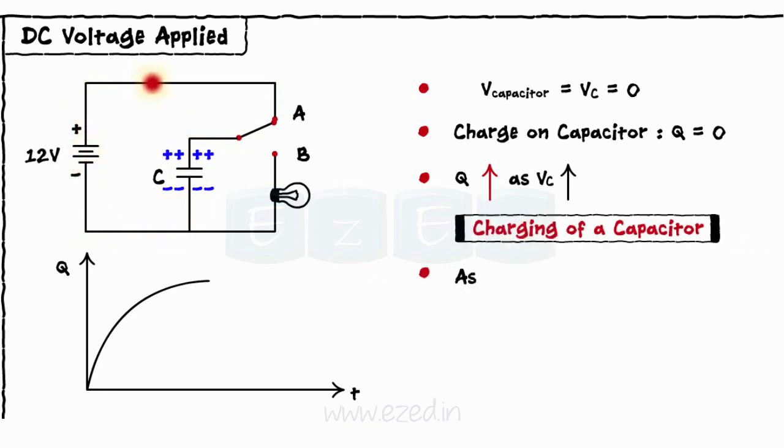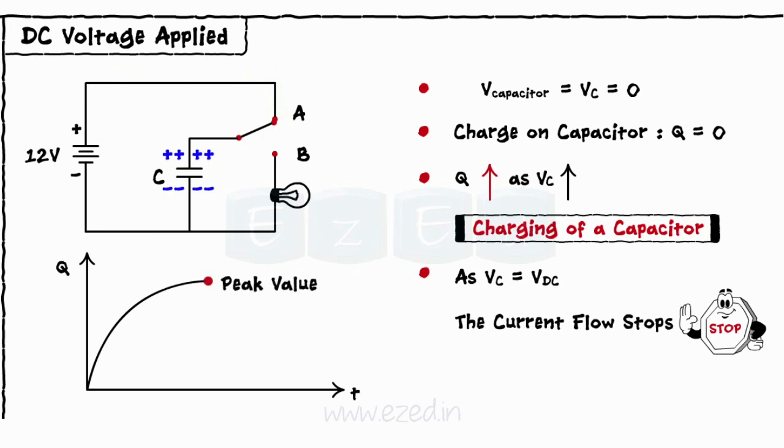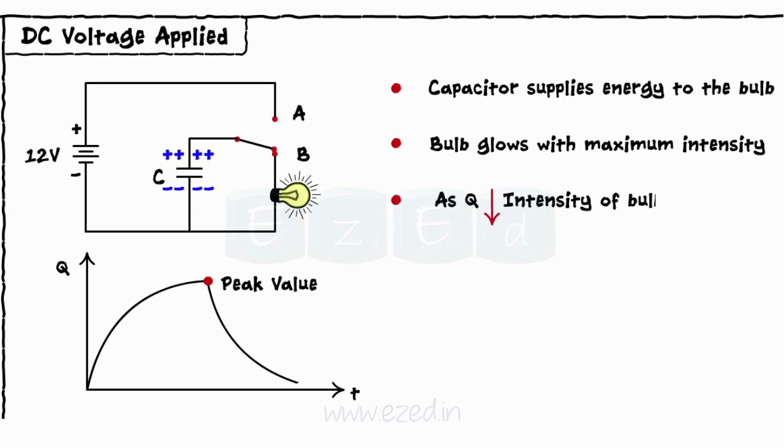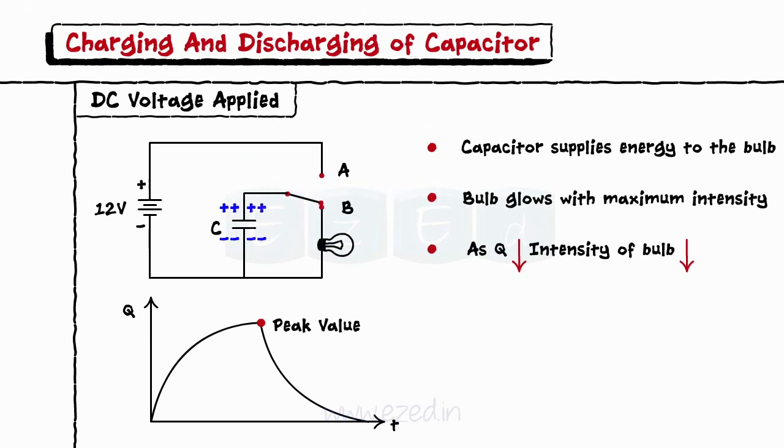Once the voltage across the capacitor equals the applied voltage, the current flow stops and the capacitor reaches its peak value. Now, we disconnect the capacitor from position A and connect it to position B. As the capacitor holds the energy for some time, it supplies voltage to the bulb and the bulb starts glowing with maximum intensity. As the charge across the capacitor gradually decreases, the intensity of a bulb also decreases and after some time, the bulb goes off. This period is called as discharging of a capacitor.